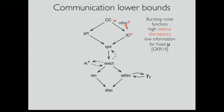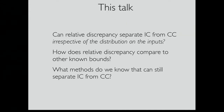In the talk we saw yesterday, they proposed a new method called the relative discrepancy, and showed that for a fixed distribution you can get a separation: the relative discrepancy gives a lower bound on communication complexity, and the information complexity for that function and distribution is small — with an exponential gap. In this picture — more like a non-distributional picture — I'd like to see where this relative discrepancy sits relative to other bounds.